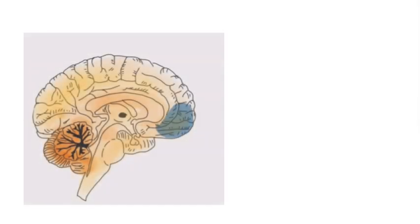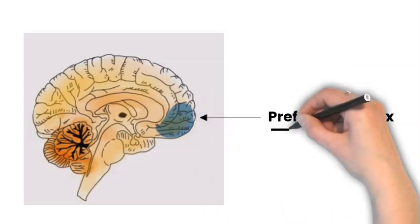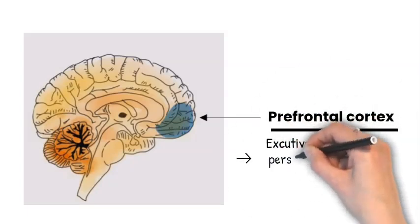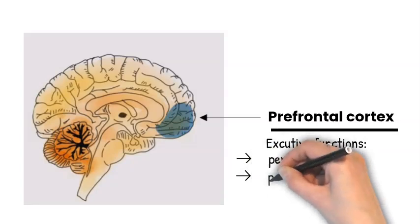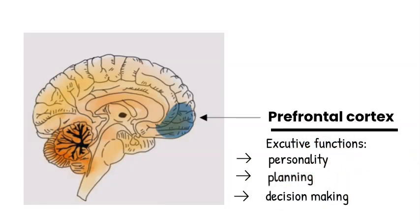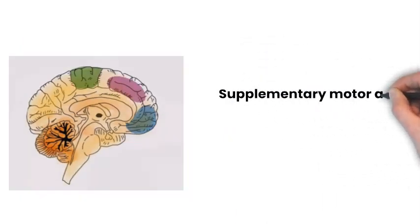Since the anterior cerebral artery supplies three important areas: first, the prefrontal cortex which is responsible for executive function. The patient will have personality changes and disorders in planning and decision making.